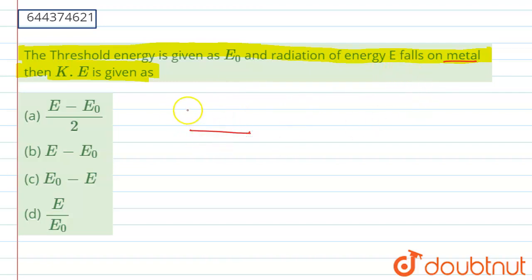Suppose we have a metal and if we fall E amount of energy on it, then the electron will always come out if this energy is greater than the threshold energy, that is the energy should be possessed by this electron to come out from the metal surface, that is it should have a minimum energy of E₀ to come out from the metal surface. So our radiation energy should be greater than the threshold energy for having a photoelectric effect.